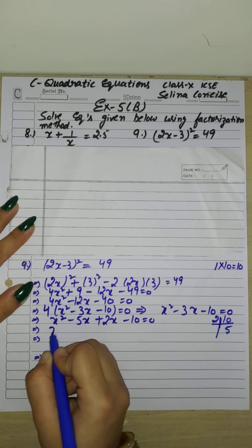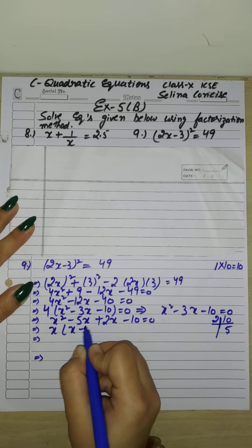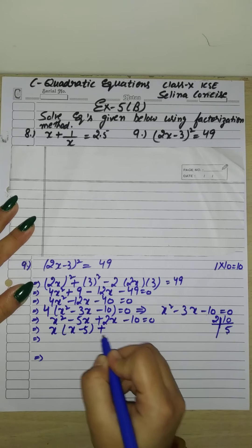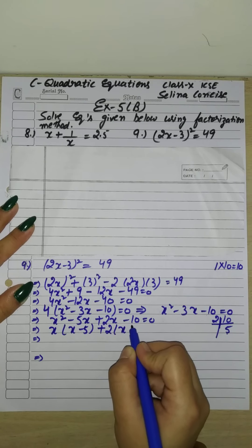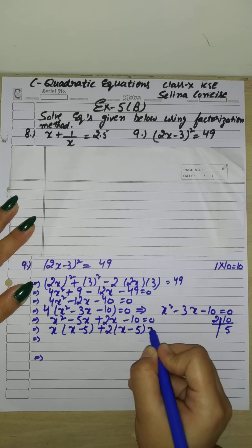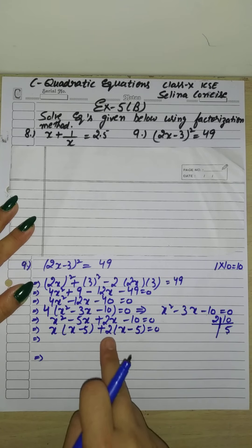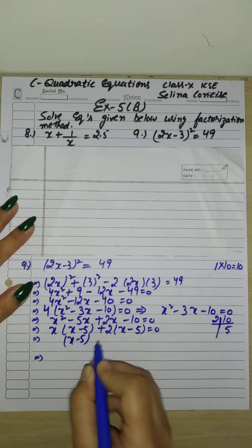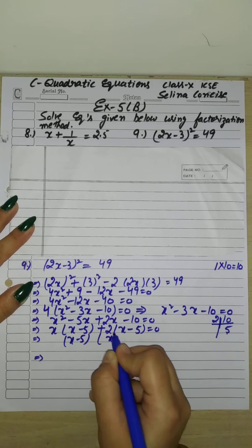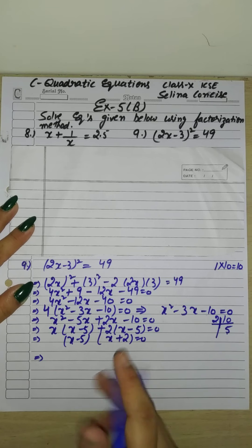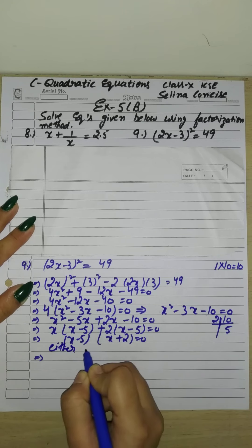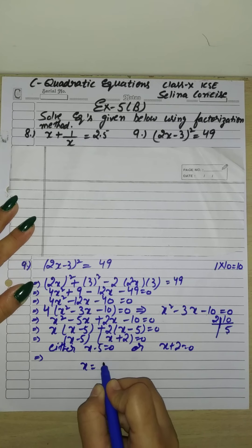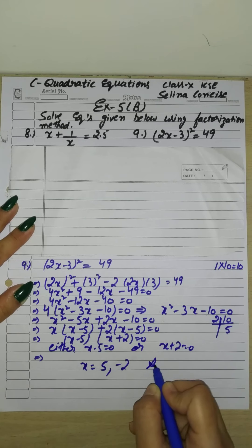Now we can see common factors. We take x common from the first two terms to get x(x − 5), and 2 common from the last two terms to get 2(x − 5). Both groups have (x − 5) common, so we get (x − 5)(x + 2) = 0. When the product of two terms is zero, either the first term is zero or the second term is zero. So x = 5 or x = −2. This is your answer.